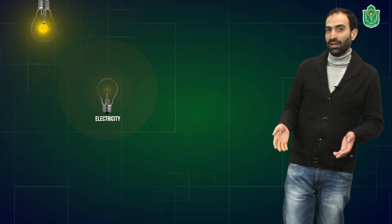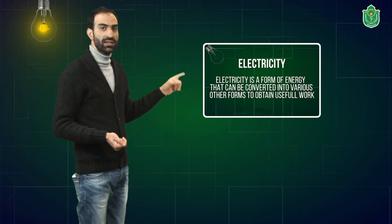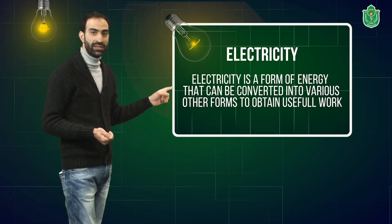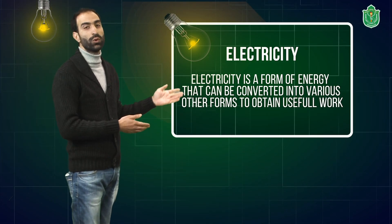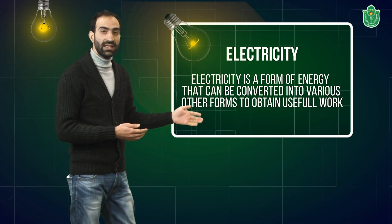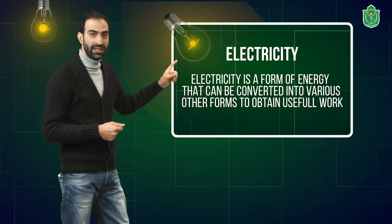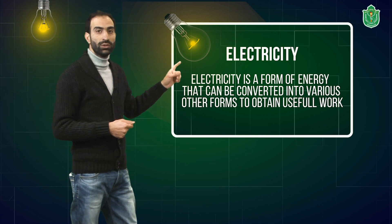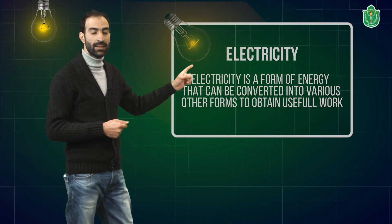So children, let us start our chapter with introduction of the electricity. What is electricity? Electricity is a form of energy that can be converted into various other forms to obtain useful work. This electricity runs in a closed and complete loop throughout its source and the various appliances.